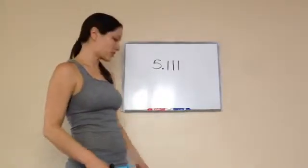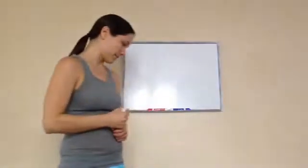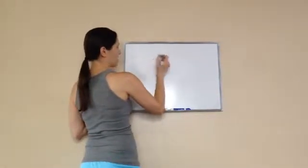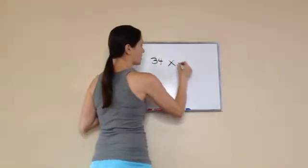Okay, fifth grade lesson 111: multiplying decimal numbers by 10, 100, and 1000. Let's do a quick review. Do you remember me telling you, let's say I did 34 times 10. Do you remember the easy way you can do this problem?